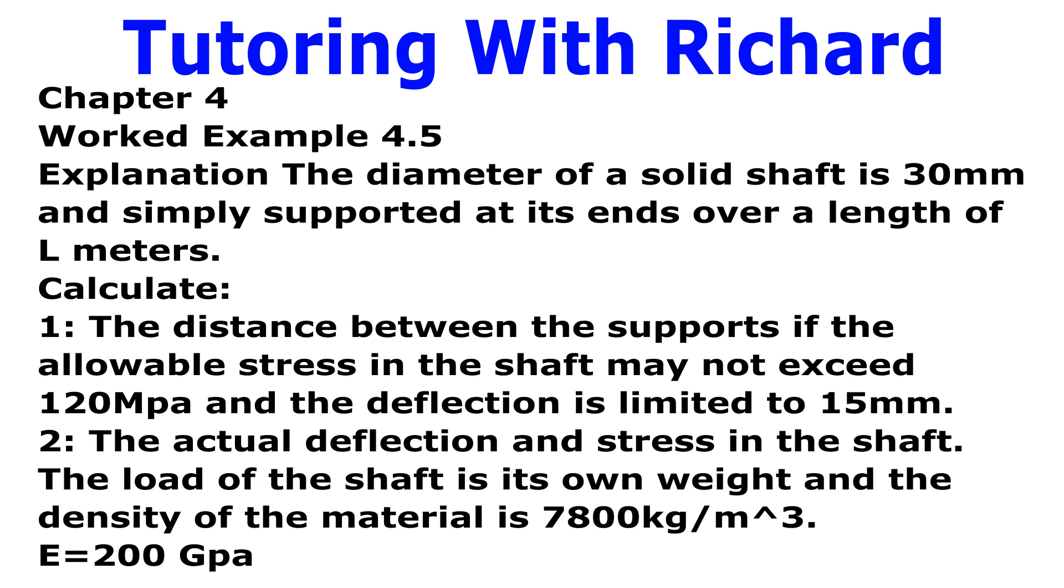Number 2: The actual deflection and stress in the shaft. The load on the shaft is its own weight and the density of the material is 7,800 kg per meter cubed. E is equal to 200 GPa.